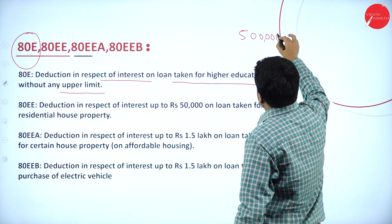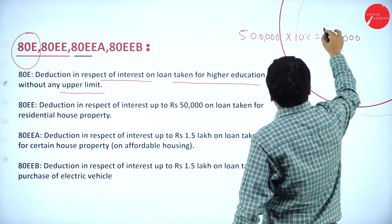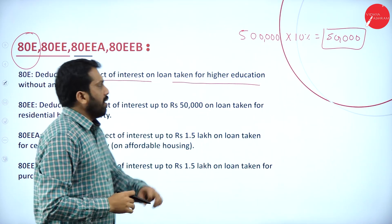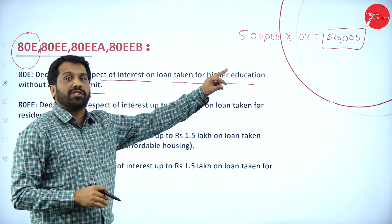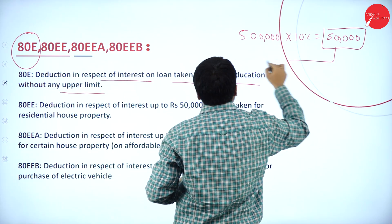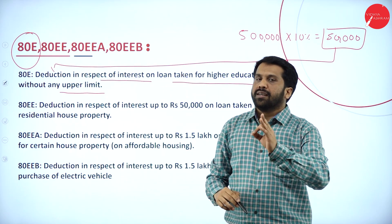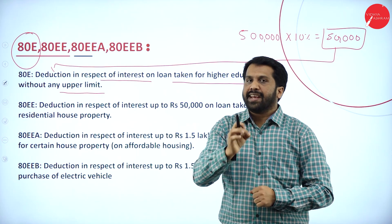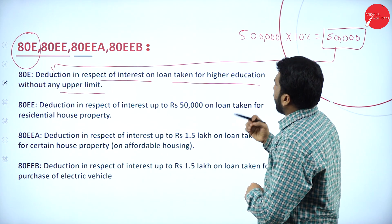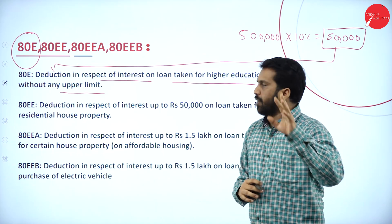For example, assume you have taken a five lakh loan and the rate of interest is ten percent — that is fifty thousand per annum. Whatever fifty thousand interest you pay, this interest will come under your deduction under Section 80E. The deduction is in respect of interest on loan taken for higher education, without any upper limit.